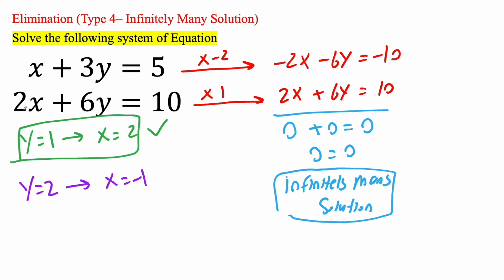Now we have to try the second equation. 2 times negative 1 is negative 2. 6 times 2 is 12. Negative 2 plus 12 is 10. So that's also correct.